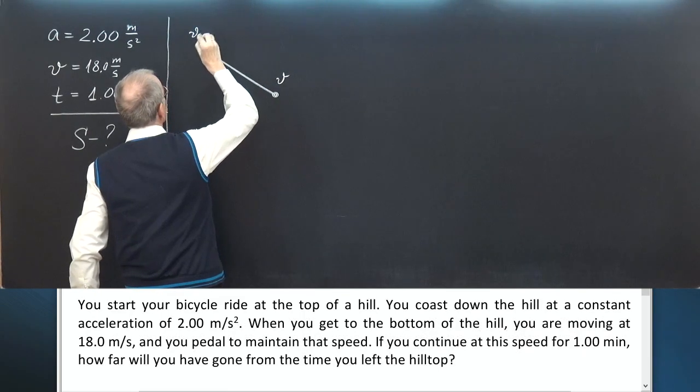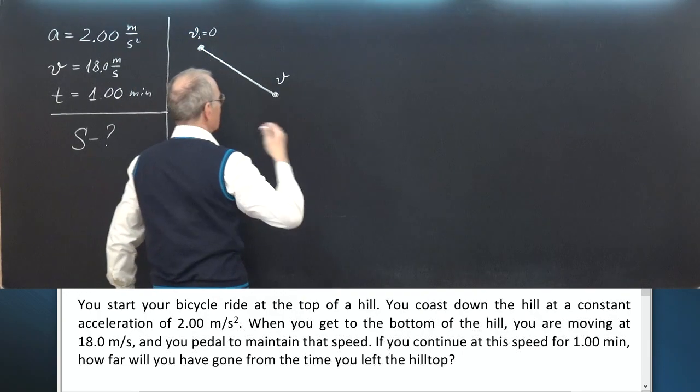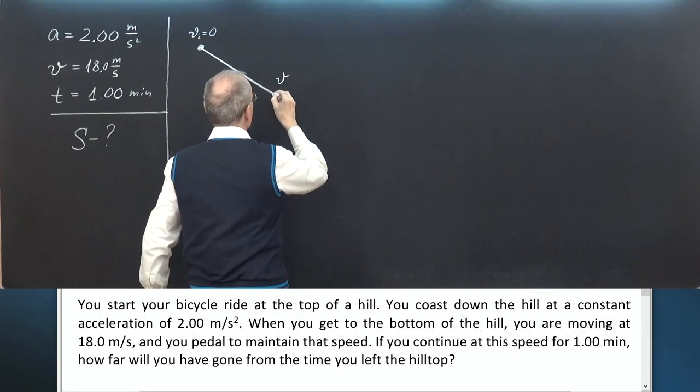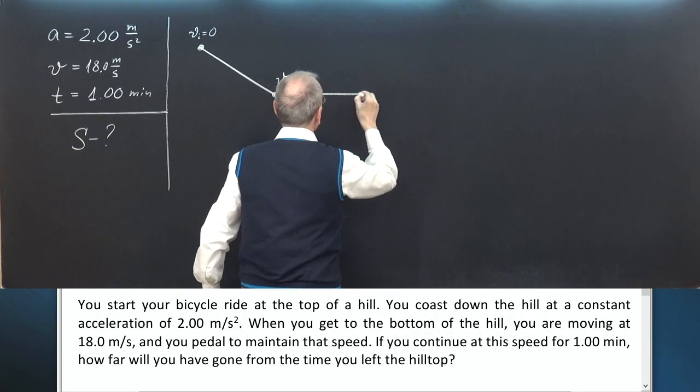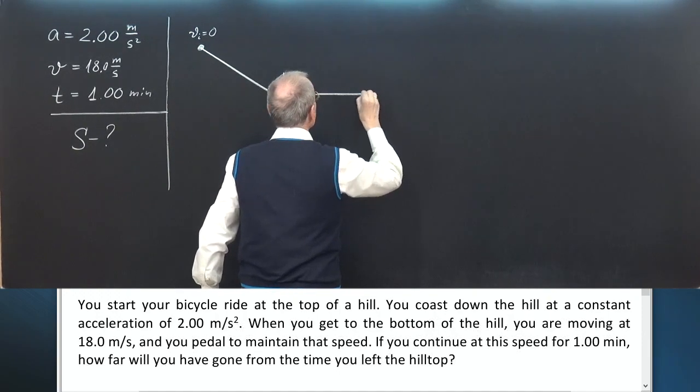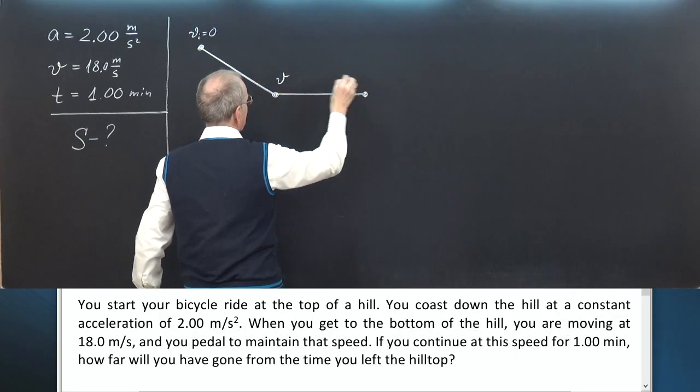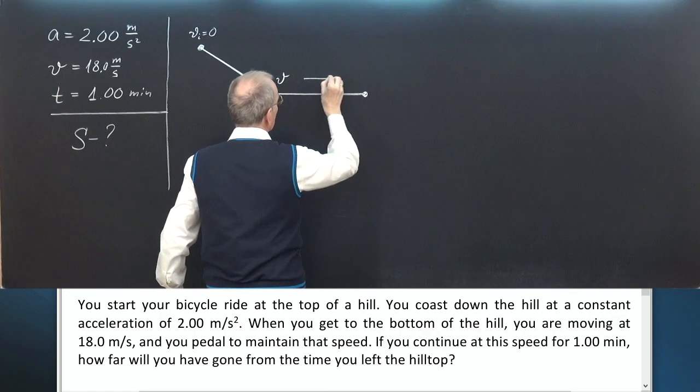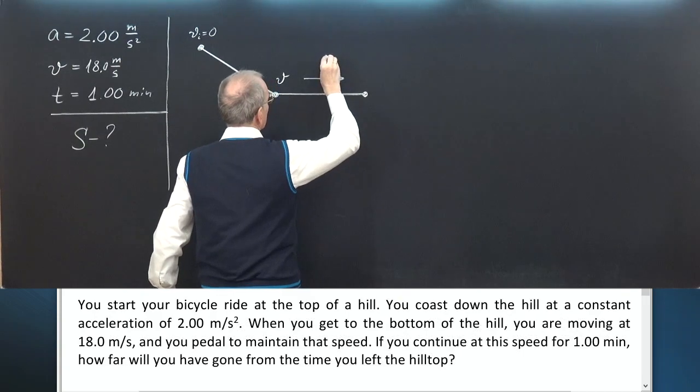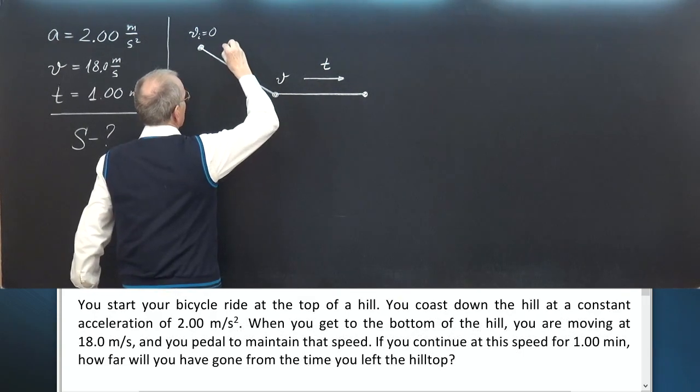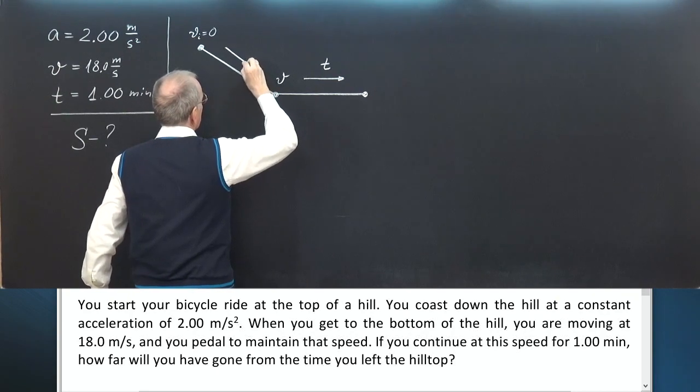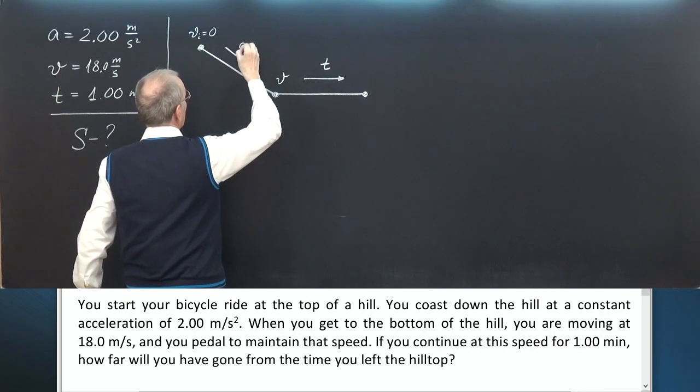Here you reach the velocity of 18.0 meters per second, V. Initial velocity V initial equals zero. You start your coasting down. This is the horizontal part of your ride where you maintain the speed V for one minute T. The acceleration during the coasting down is A.